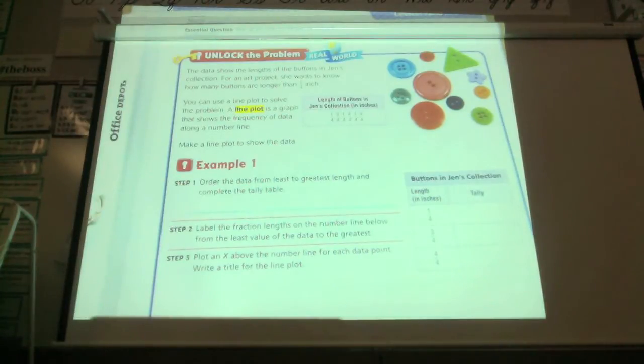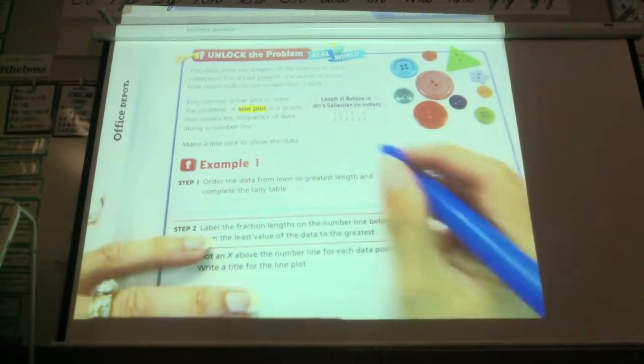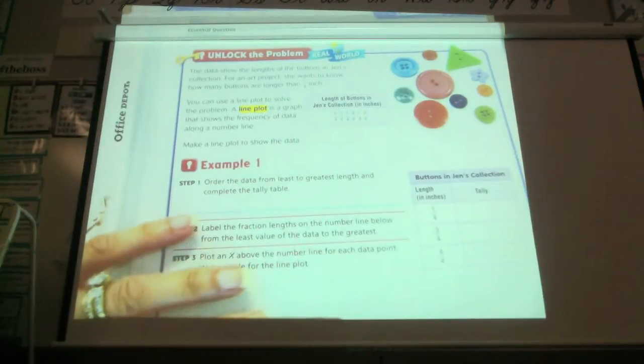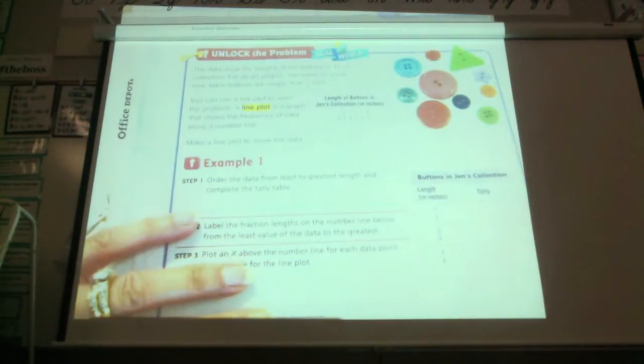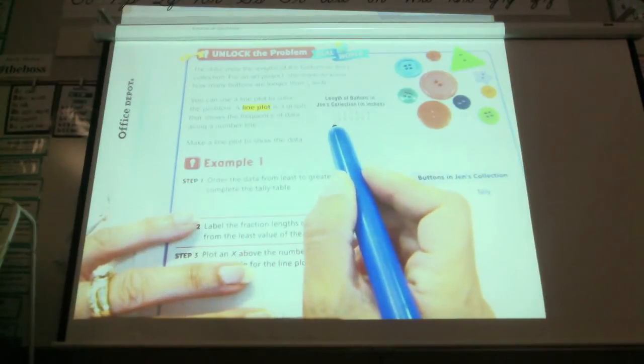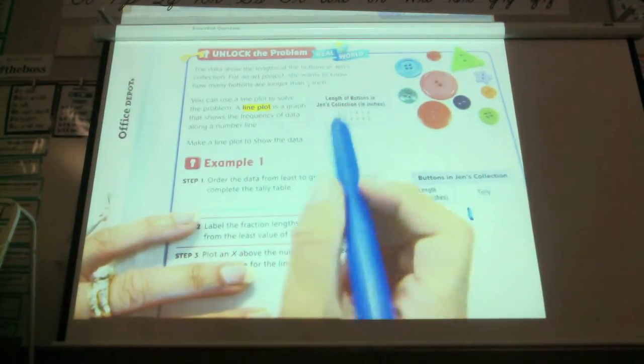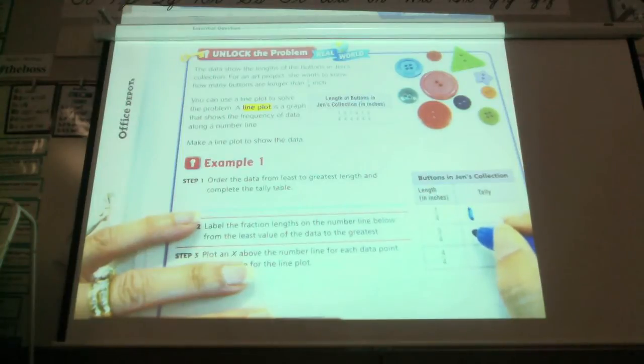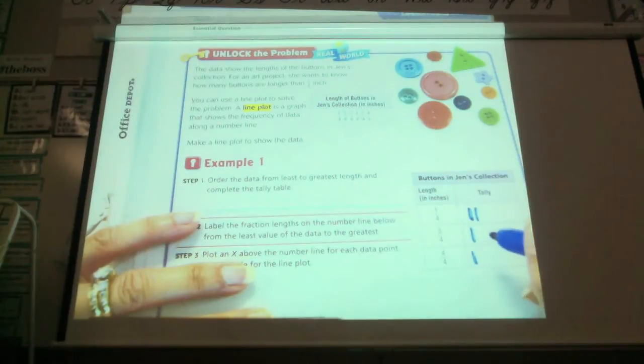So we are going to first make a line plot to show the data. Step one, order the data from the least to greatest length and complete the tally marks. So they've already ordered them least to greatest for you. You guys know how to do this, especially when the denominator's the same. So we're just going to go ahead and do tally marks. So how many one-fourth? What is this one? One-fourth. What's the next one? Three-fourths. And then? One-fourth. One-fourth. And then? Four-fourth. Four-fourths. One-fourth. Four-fourths. Four-fourths.